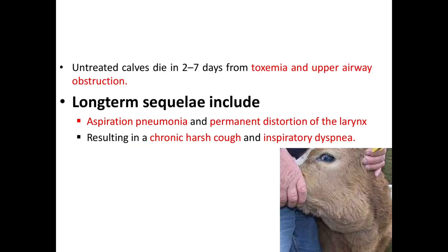Untreated calves die in 2 to 7 days from toxemia and upper airway obstruction. Long-term sequelae include aspiration pneumonia and permanent distortion of the larynx, resulting in chronic harsh cough and inspiratory dyspnea.